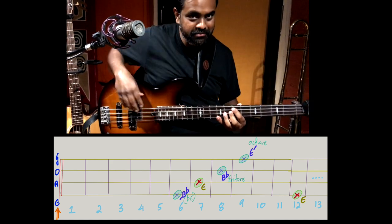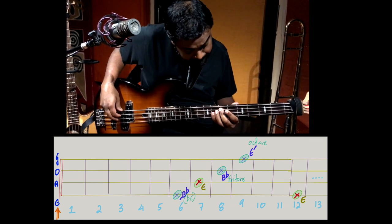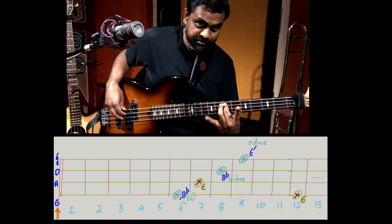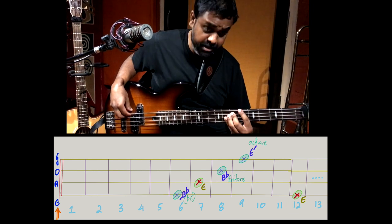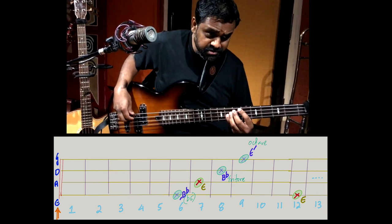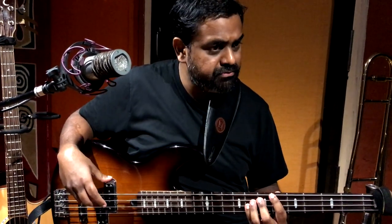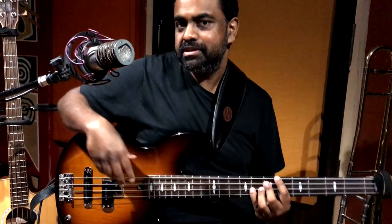You can play a higher tritone — probably save both your fingers by starting with the middle finger. It sounds very diabolic and villainous, very against the system. You can build a riff just with the root and the tritone.